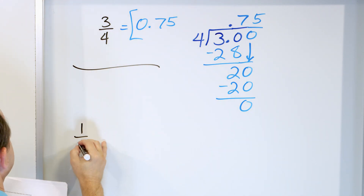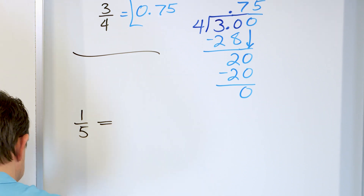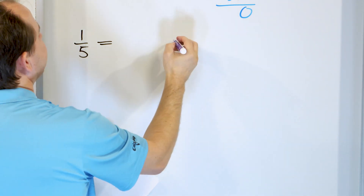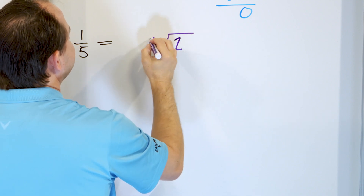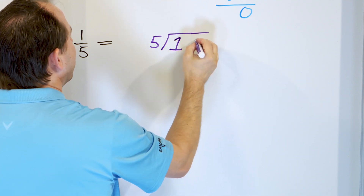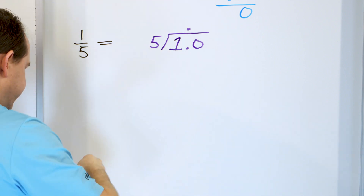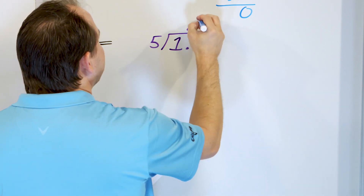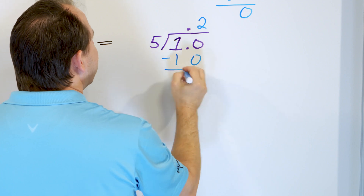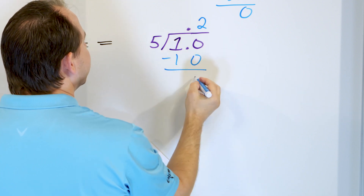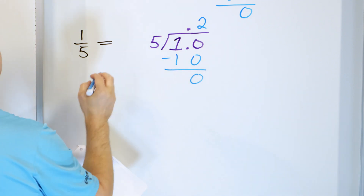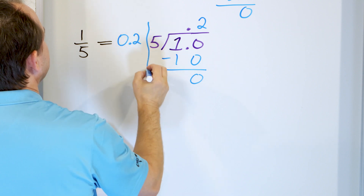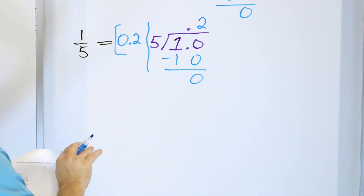What about one fifth? We take one and divide by five, making it 1.0. Five times two is 10 — subtract, 10 minus 10 is zero, so we stop immediately. One fifth equals 0.2.